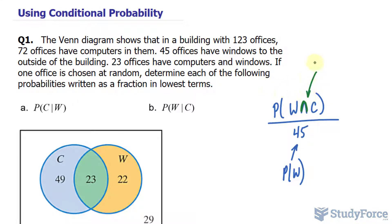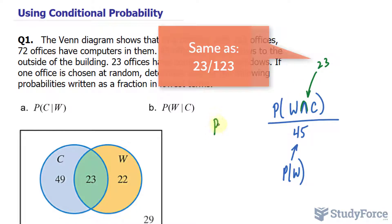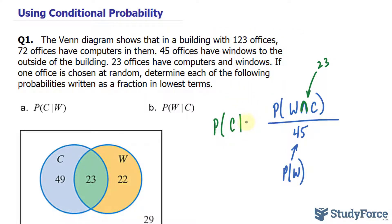it's given as 23. Therefore, the probability of choosing C given that you already chose an office with windows is 23 over 45.